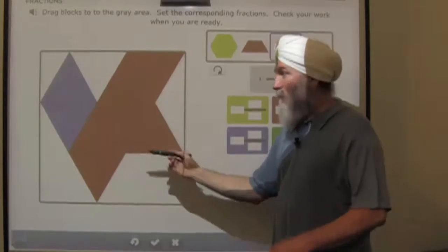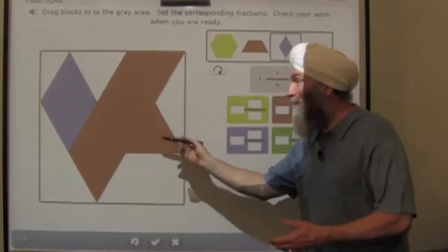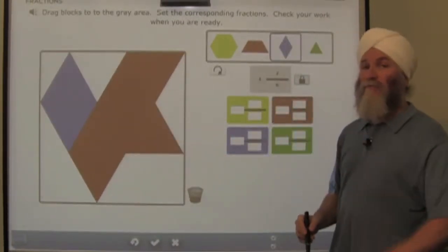So the red is 6 sixths or 1. The blue are 2 sixths. That's 1 and 2 sixths. There is your mixed number.